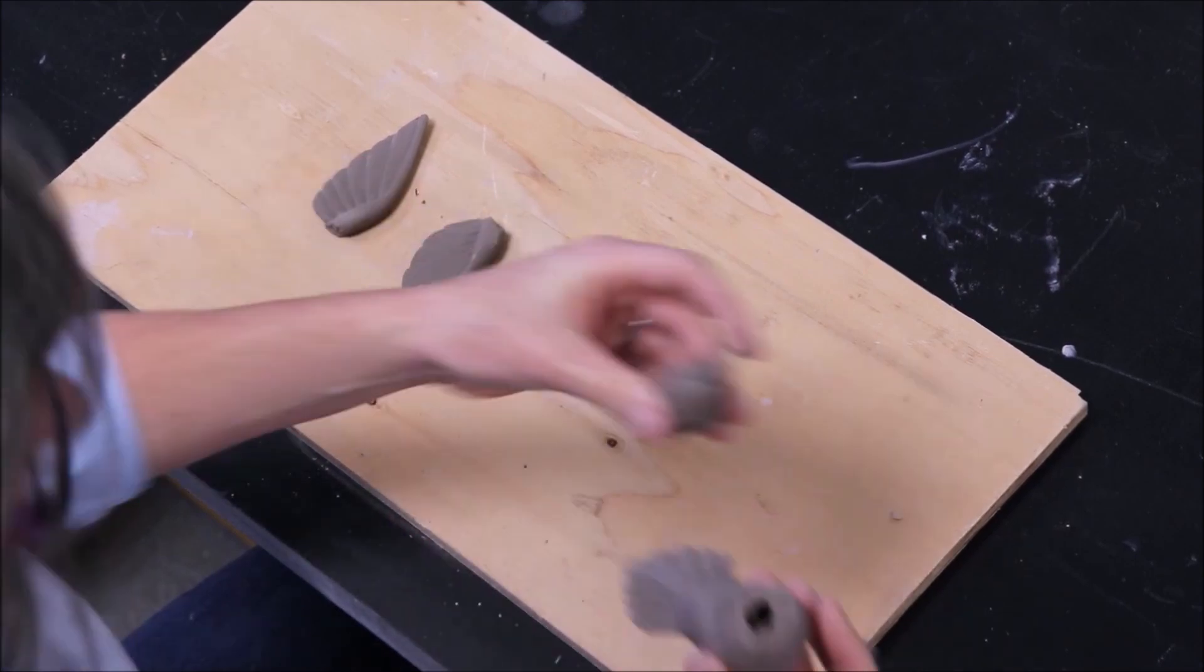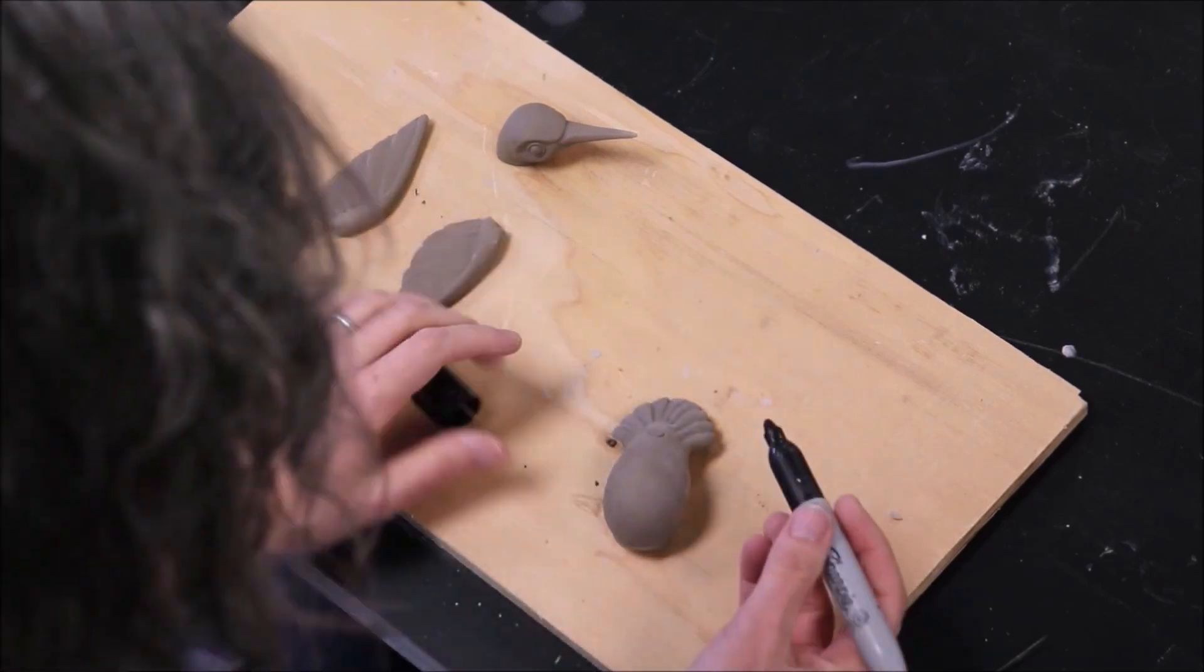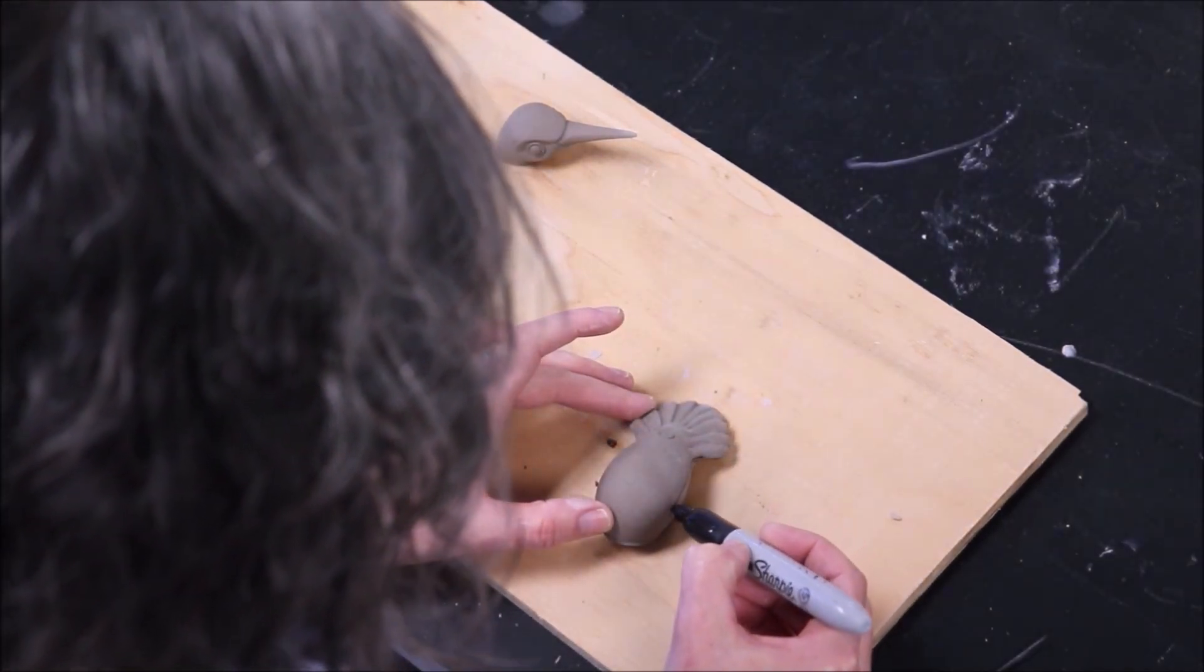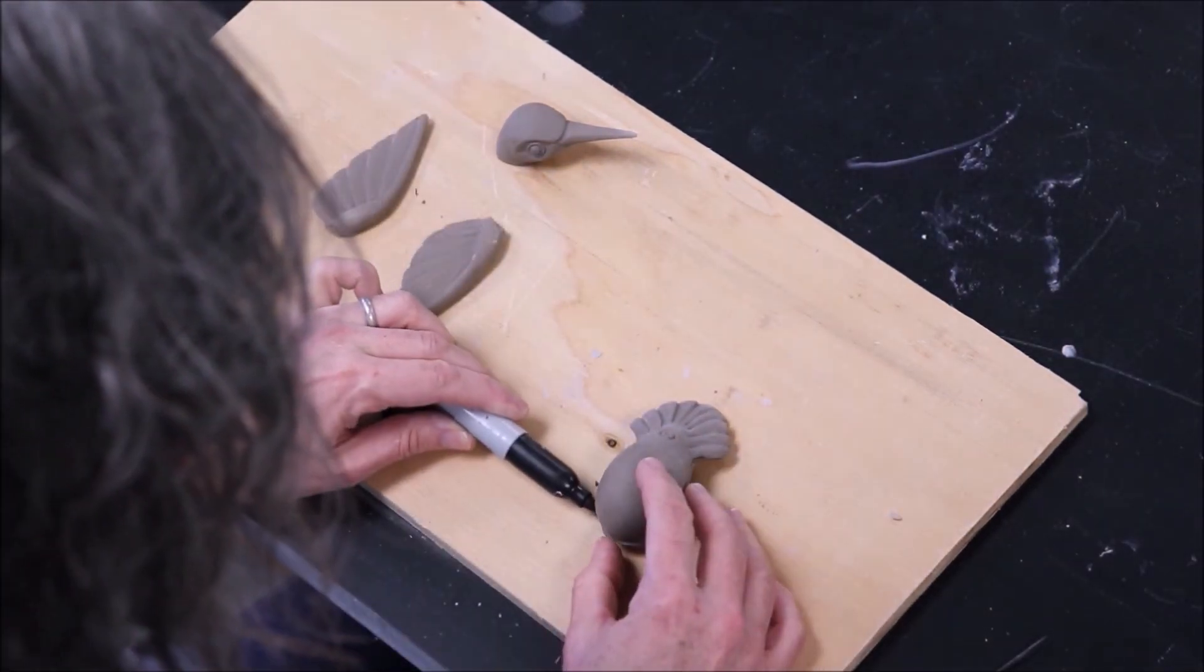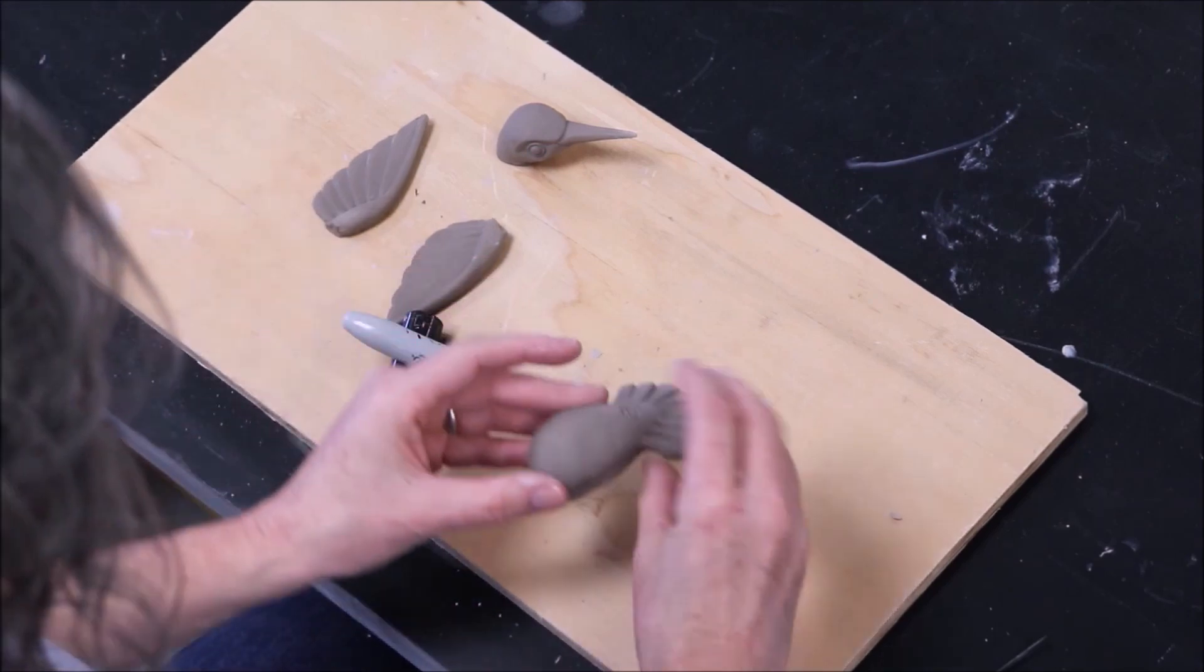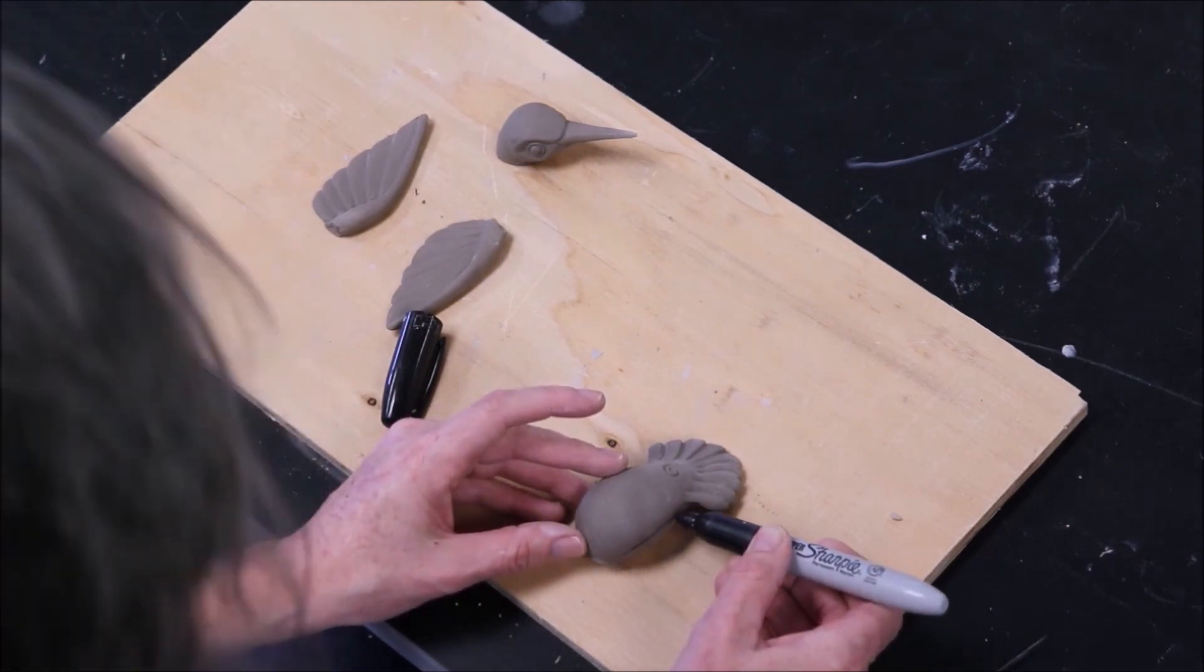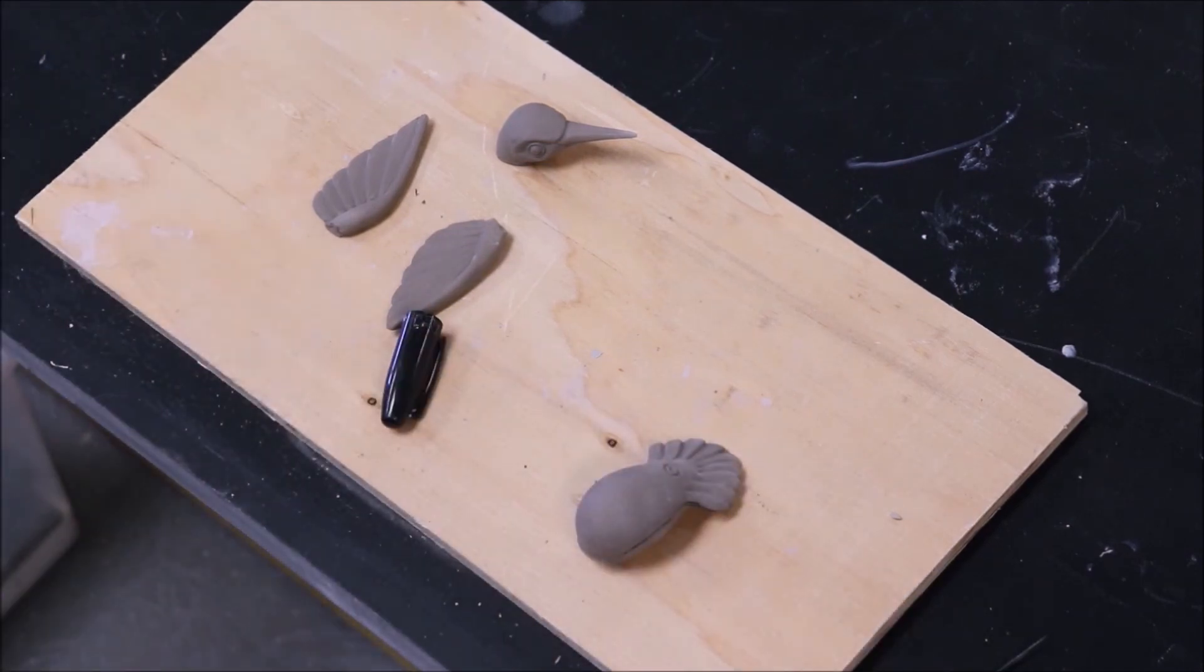It's also easier to have the wings separate as well. I could have the head and wings all on the same piece, and then it would be probably something like a four-piece mold. A four-piece mold is easy enough to make, but it's more time-consuming, and I still wouldn't have a place to pour in the slip.